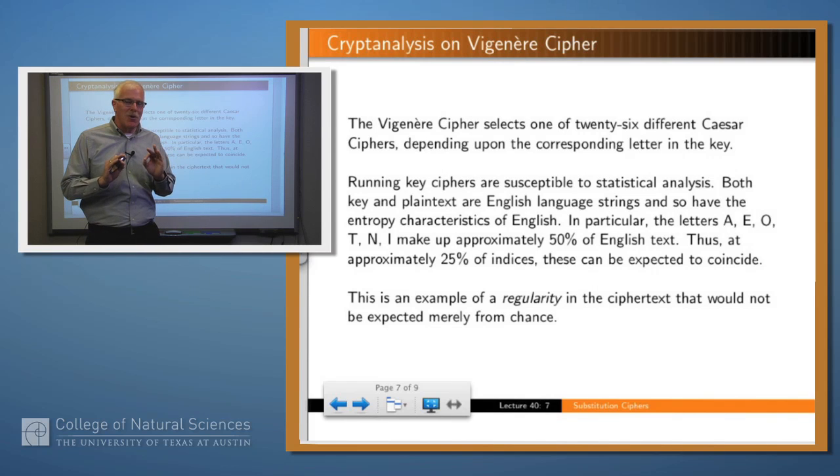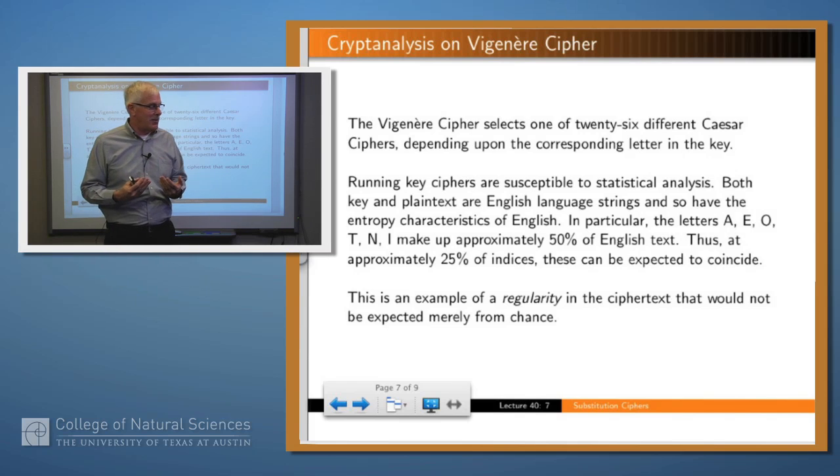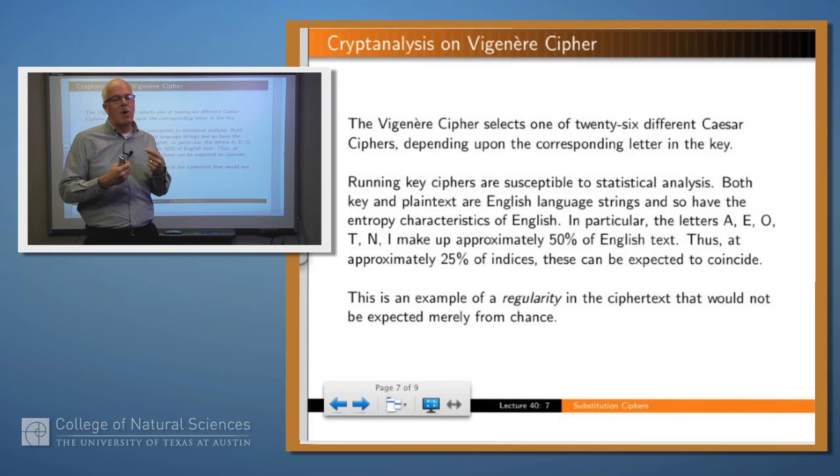However, if you're using English for both the plain text and for the key, then there are certain regularities in English which are preserved in the cipher text. So, for example, some letters are very likely or much more common in English than other letters. And so you're going to have those letters appearing frequently in the plain text and also in the key.